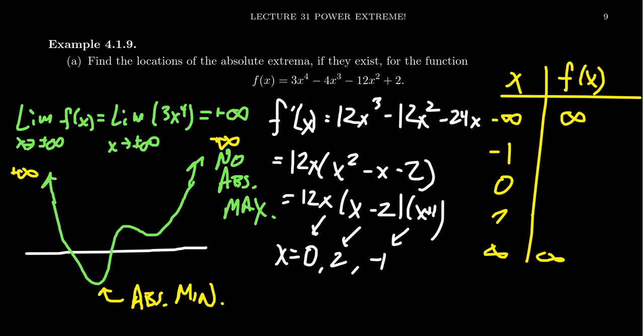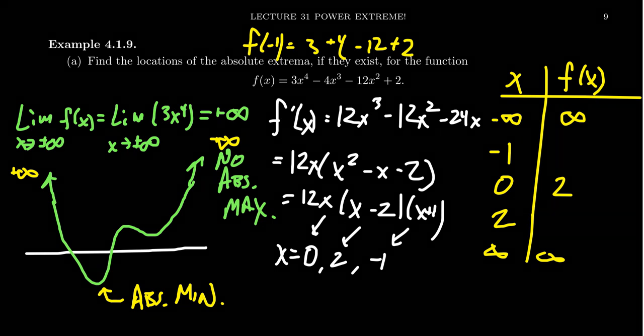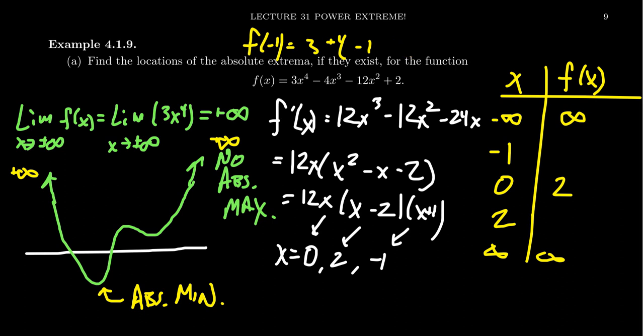We're going to get negative 1, 0, and 2. Now plug these numbers into the function. For example, if I plug in 0, you get a 2. So f(0) is equal to 2. If you plug in negative 1, so f of negative 1, you're going to get 3 plus 4 minus 12 plus 2. So 2 and 3 and 4 are 7 plus 2 is 9 minus 12. That's going to give us a negative 3, which we add to our table.